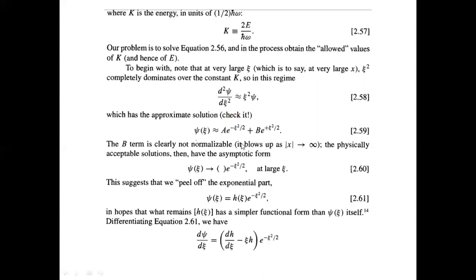Our solutions must be evaluated at x equals plus or minus infinity. For the function to describe a physical state, it must be normalizable. The term that blows up at positive infinity must be excluded — so the coefficient B cannot be a plain constant; it has to be some function, which we'll call H, that keeps the solution well-behaved.